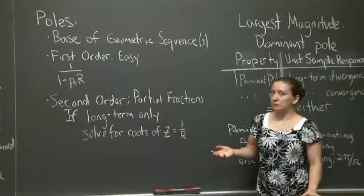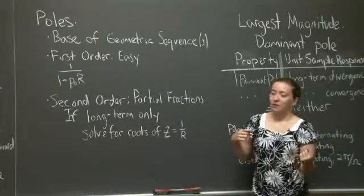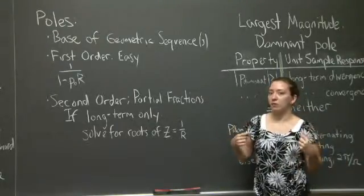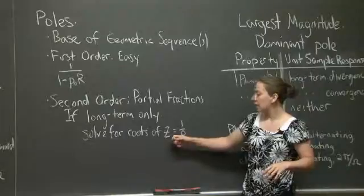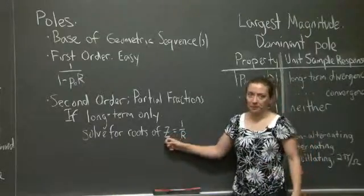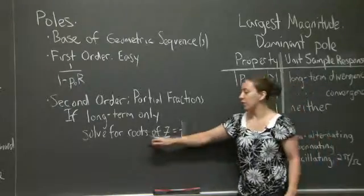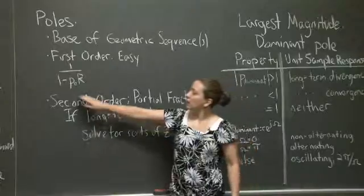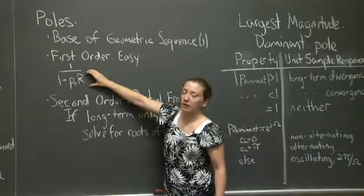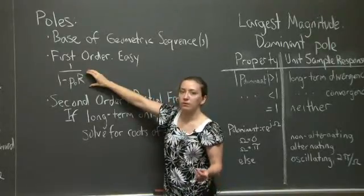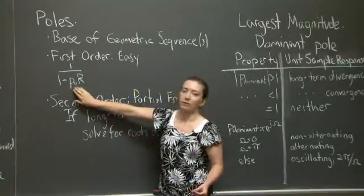We're mostly going to be talking about long-term response. So we can get around the fact that we're dealing with higher order systems and not solving partial fractions by substituting in for an expression called z, which actually represents the inverse power of r, and then solving for the roots of that equation. If you substitute z in for 1 over r in this denominator and solve for the root associated with that expression, you'll get the same result — you'll actually end up with p0.